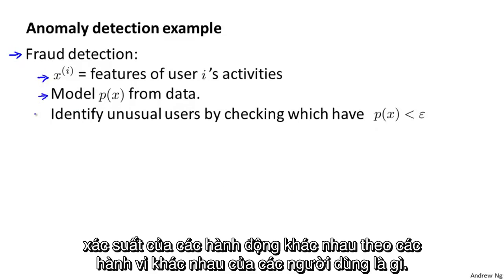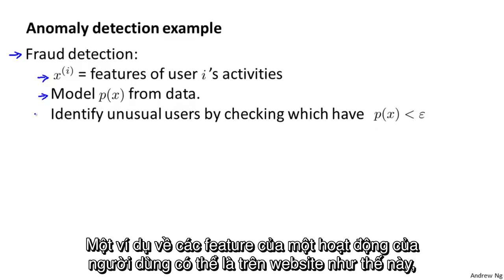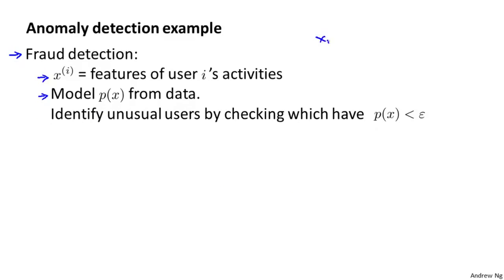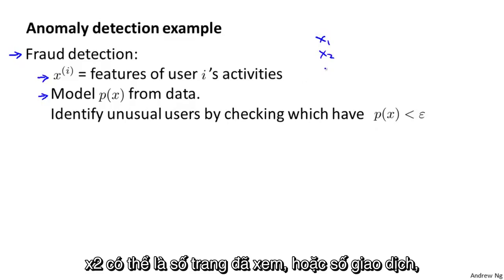And what you can do is build a model to say, what is the probability of different users behaving different ways? What is the probability of a particular vector of features of a user's behavior? So examples of features of a user's activity may be on the website, it'd be things like maybe X1 is how often does this user log in?